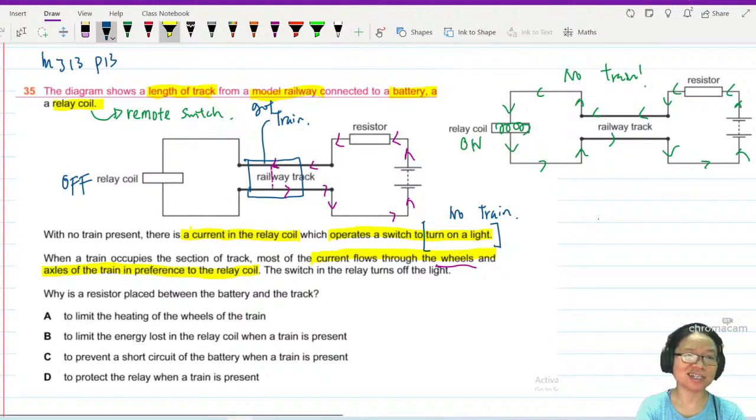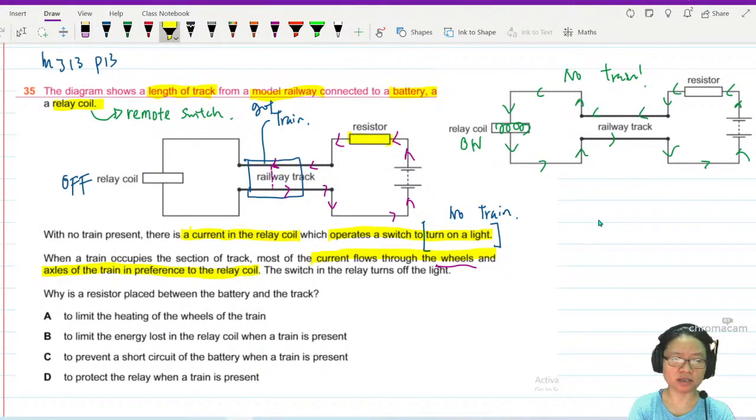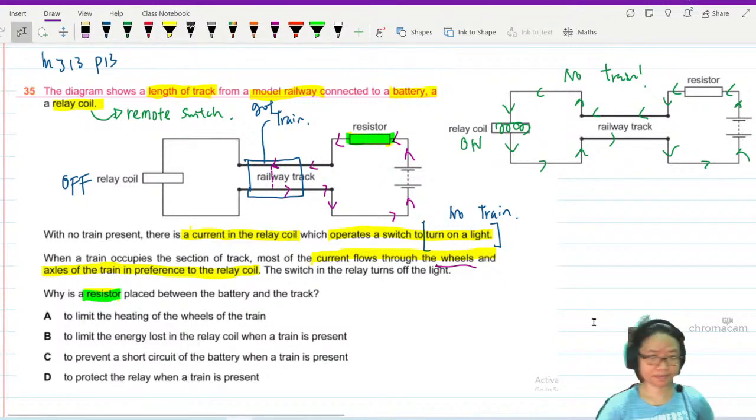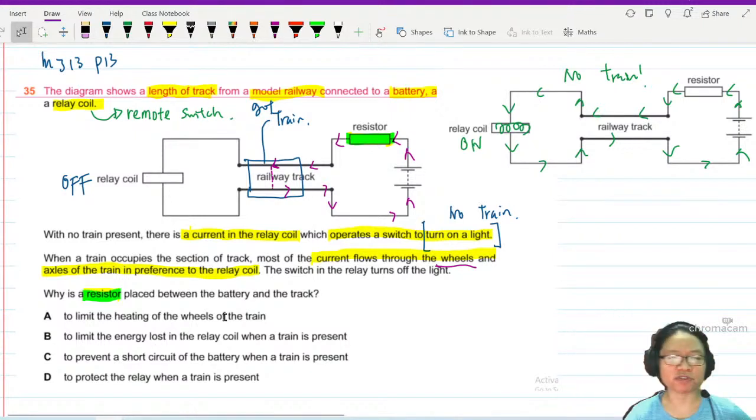The question here is, why is there a resistor placed between the battery and the track? Let's look through it one by one. Option A: to limit the heating of the wheels of the train. Option B: